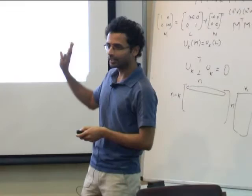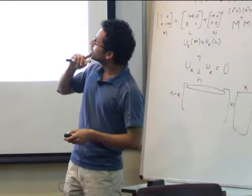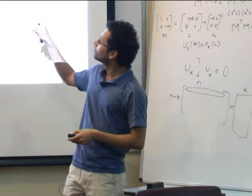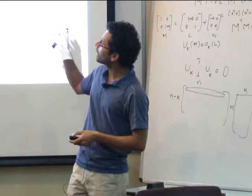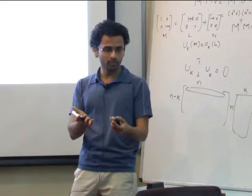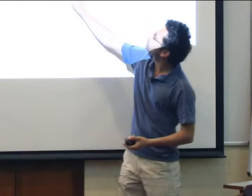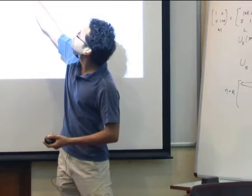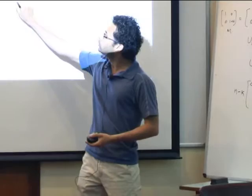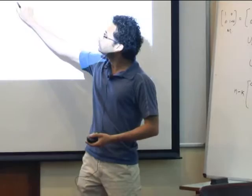Here are two exercises. The first says: if L is low rank and M = L + N, then taking the top-K projection P_K(M) of M gives ‖P_K(M) − L‖₂ ≤ 2‖N‖₂. So even though you may blow up the error between M and L by a factor of two, you still obtain a low-dimensional representation close to L.